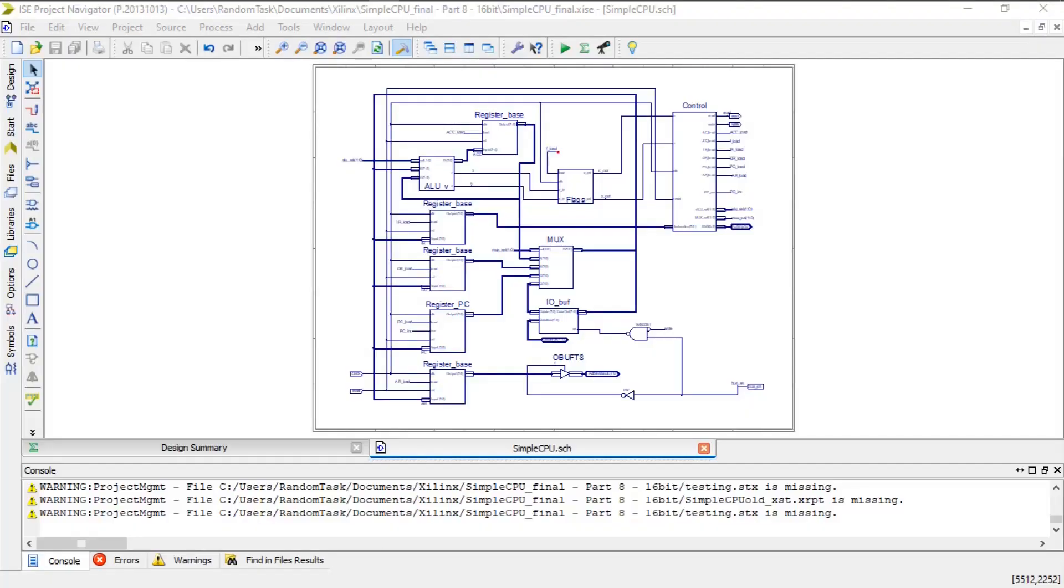The CPU schematic is looking a little cramped, and there isn't enough room to add the new registers with their connections. So instead I'll create a Verilog file that will contain the address control outline that we just looked at, and add it to the CPU as a single block.